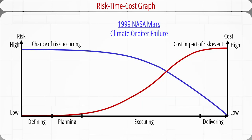This graph shows the general relationship among risk, time, and cost. The vertical axis on the left shows the risk level from low to high. The horizontal axis shows different phases of the project life cycle, including defining, planning, executing, and delivering. The vertical axis on the right shows the cost impact of the risk event on the project from low to high. There are two curves: the chance of a risk event occurring is represented by the blue curve, and the cost to deal with the risk event is represented by the red curve. We can see that the chance of a risk event occurring is greatest in the defining, planning, and early executing phases. The cost impact of a risk event is less if the event occurs earlier rather than later, because it allows the project manager to take corrective actions and bring the project back to normal.